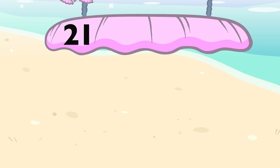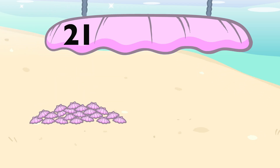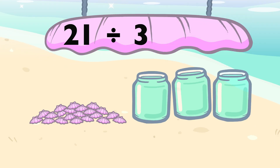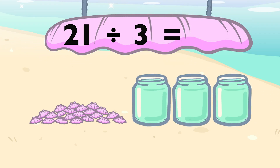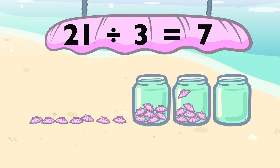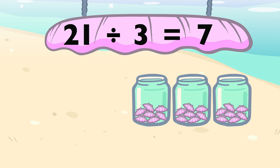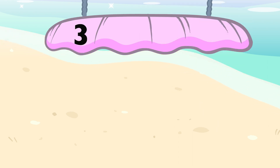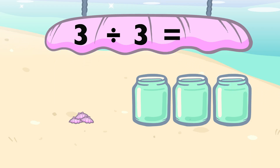21 divided by 3 equals 7. 3 divided by 3 equals 1.